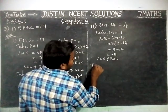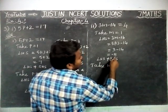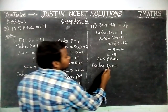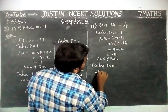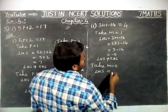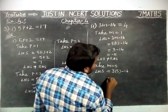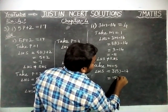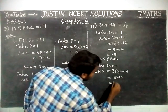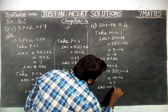We are going to take M is equal to 5, because there is a large difference. LHS is equal to 3M minus 14, so 3 into 5 minus 14 is equal to 15 minus 14. Signs are different, so the difference is 1. Here also, LHS is not equal to RHS.